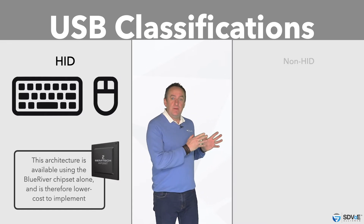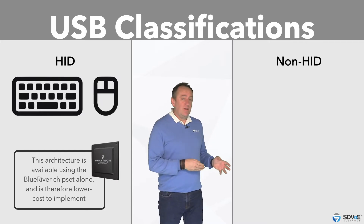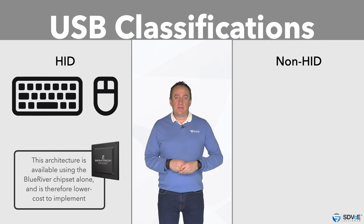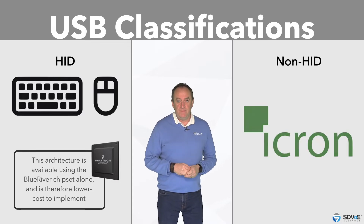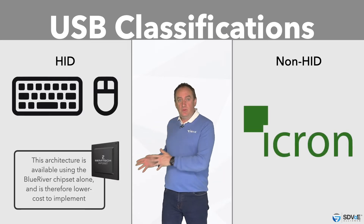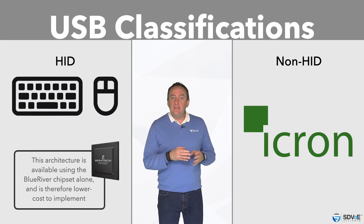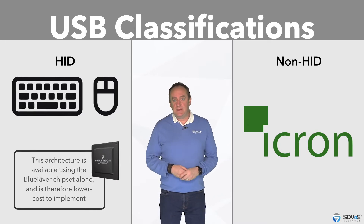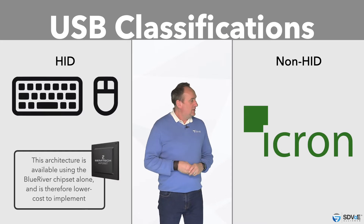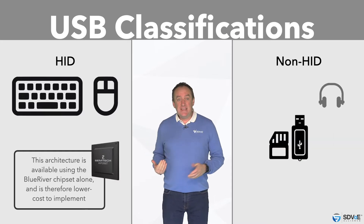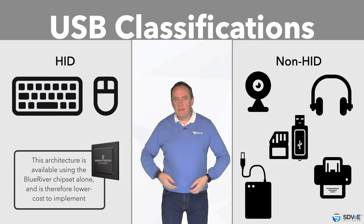The second method, and by far the most popular, is by integration of a USB Explorer chipset from SDVoE Alliance member iKron alongside the Blue River chip. Use of this iKron chipset ensures compatibility with the full range of USB 2 devices — so HID, mass storage, cameras, microphones, you name it.